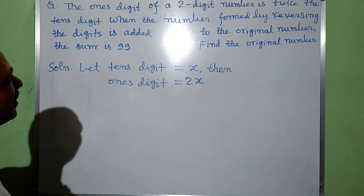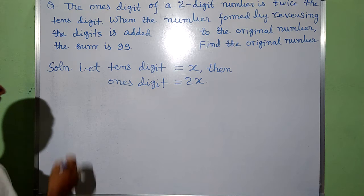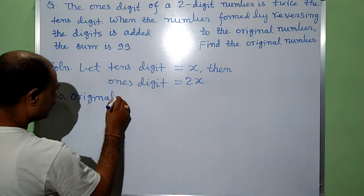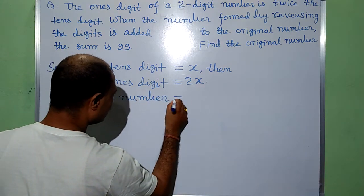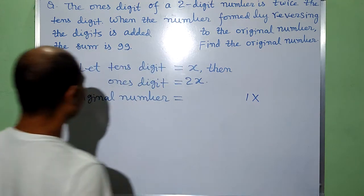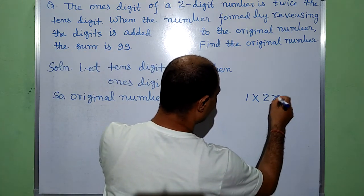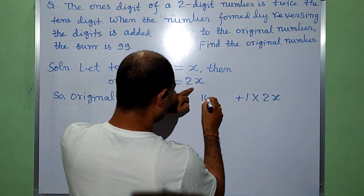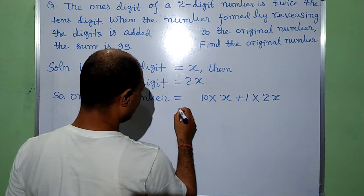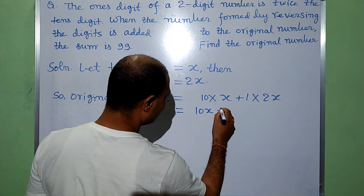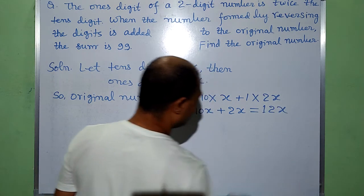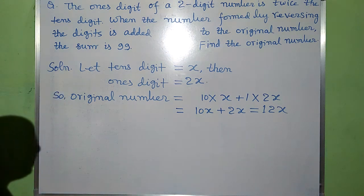Now find the original number. The original number will be 1 times the digit at 1's place, that is 2x, plus 10 times the digit at 10's place, that is x. It will be equal to 10x plus 2x, that is 12x. So the original number is 12x.